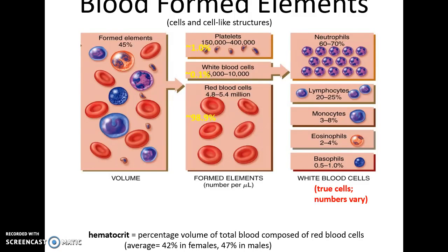Leukocytes come in many different categories, including neutrophils, lymphocytes, monocytes, eosinophils, and basophils, and then of course the platelets themselves. The term hematocrit refers to the percentage volume of blood that is made up of red blood cells, and that varies a little bit by gender, but it's somewhere between 42% to 47%.